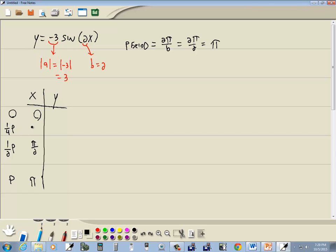And this is 1 quarter of our period. 1 quarter times π is π over 4. And then here will be 3 quarters of our period. And 3 quarters times π gives us 3π over 4.